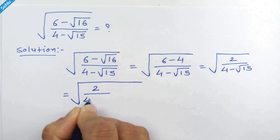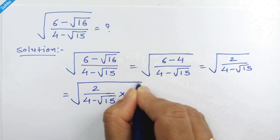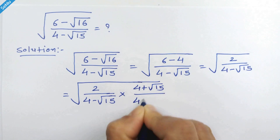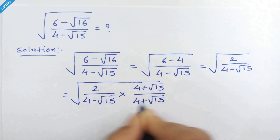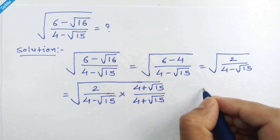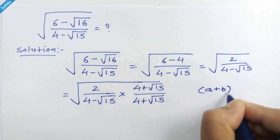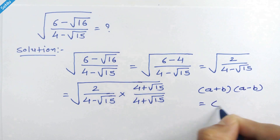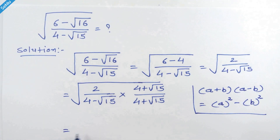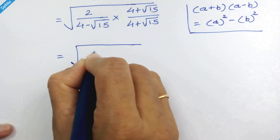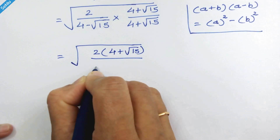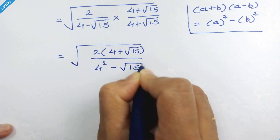Now in the next step, we will multiply by 4 plus square root of 15 upon 4 plus square root of 15. Here we have 4 minus square root of 15 times 4 plus square root of 15. This is the identity a plus b times a minus b, which equals a squared minus b squared. So we can write it as square root of 2 times 4 plus square root of 15, upon 4 squared minus square root of 15 squared.